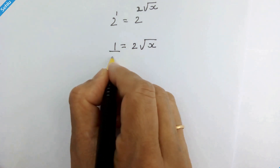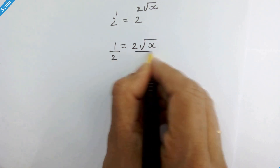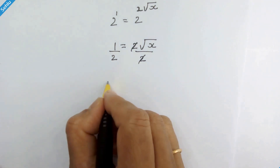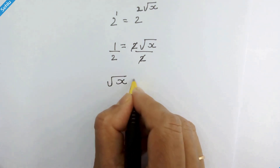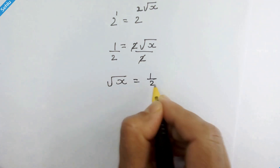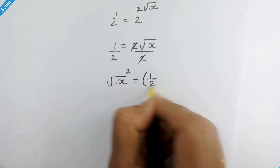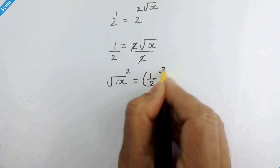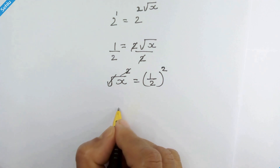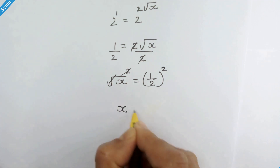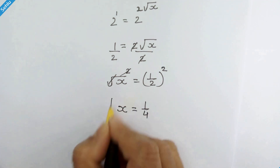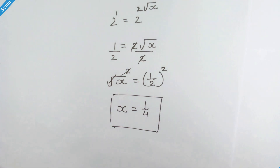So 1 is equal to 2 times square root of x. If we divide both sides by 2, we get square root of x is equal to 1 upon 2. Squaring both sides, the square and square root cancel out, giving us x is equal to 1 upon 4 as our answer.